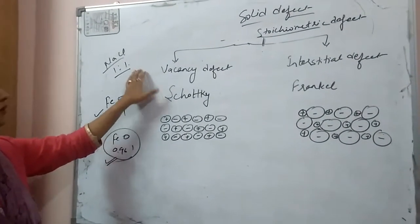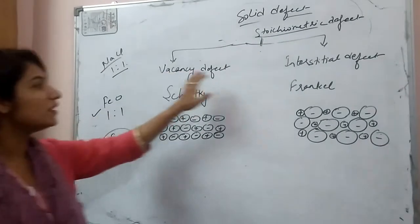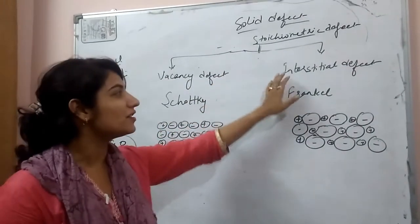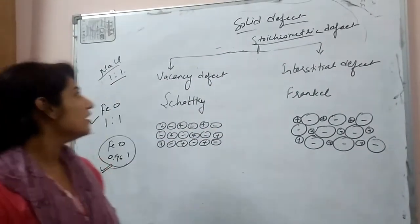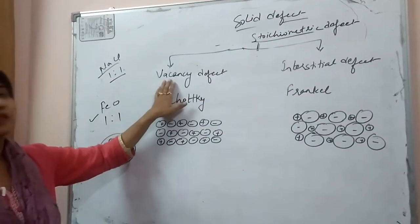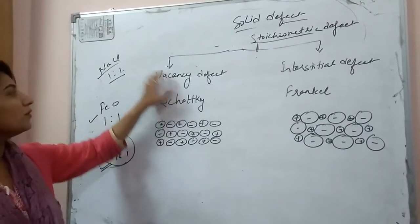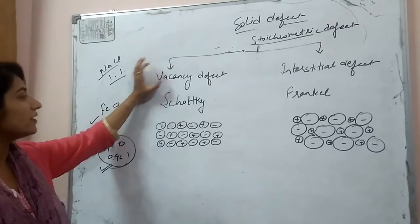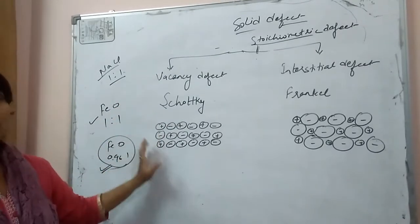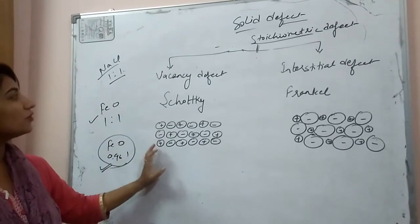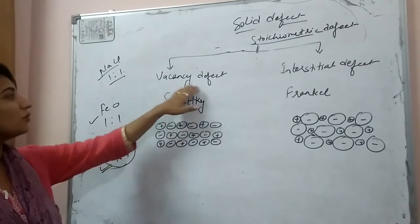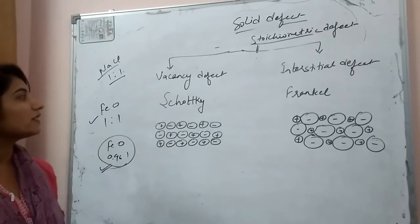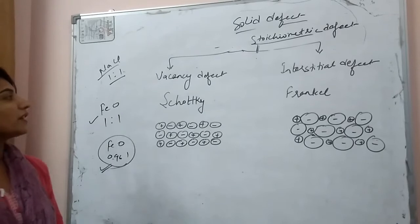Stoichiometric defects may be of two types: vacancy defect and interstitial defect. Vacancy means a vacancy will be created at the site of a cation or anion. These defects are known as vacancy defects.